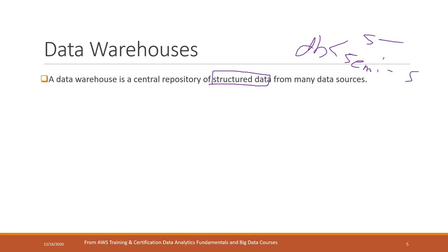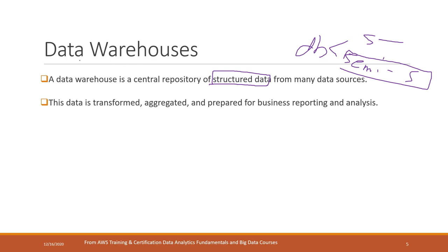Structured data includes relational databases, and semi-structured data includes NoSQL databases like document DB and network databases. Data Warehouse receives data from different data resources, and that data should be transformed, aggregated, and also prepared for business reporting or analysis.